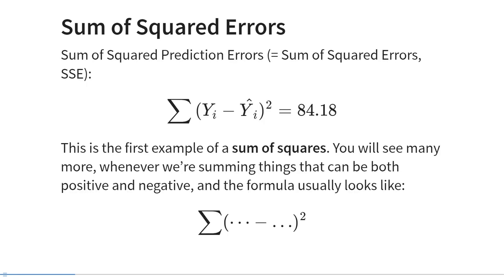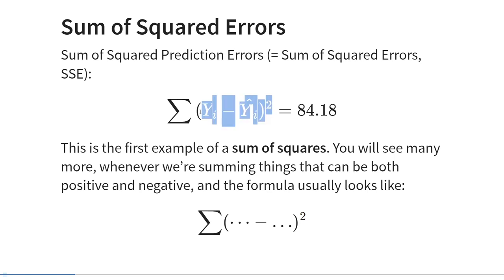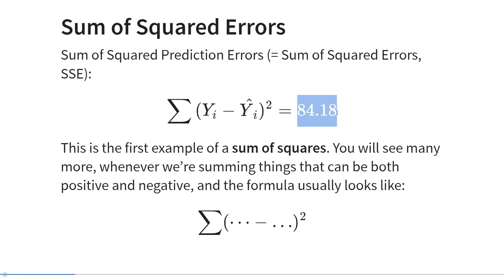So how do we calculate the sum of squared prediction errors? We use the summation operator indicated by capital sigma, meaning we're summing across the differences between the observed scores for every individual minus the predicted scores for that individual, squared. So what is summed are simply the squared prediction errors for all individuals. The result of that sum in this specific example is 84.18 — a positive number.